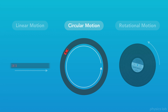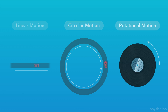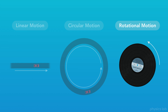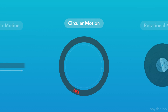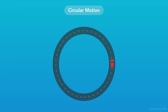Circular motion is when an object travels along a circular path. By comparison, rotational motion is when an object itself is rotating about its own center, but it's not translating. We're going to focus on circular motion in this video. This car is one example of circular motion, because it traces out a path in the shape of a circle.